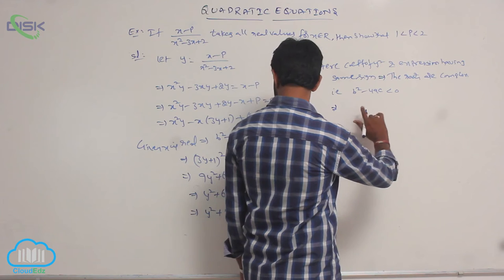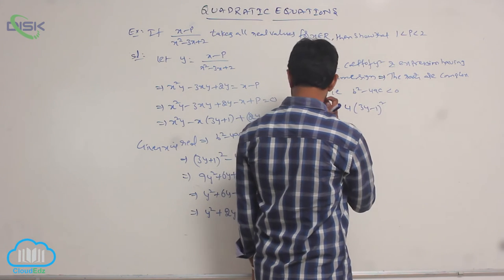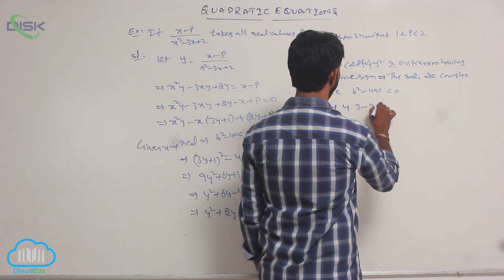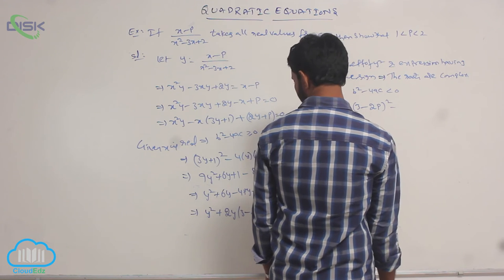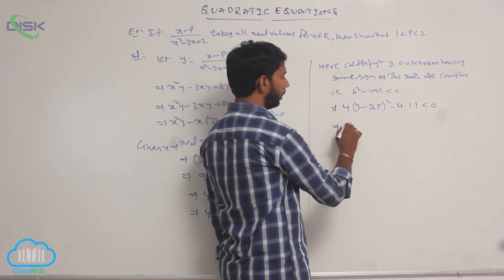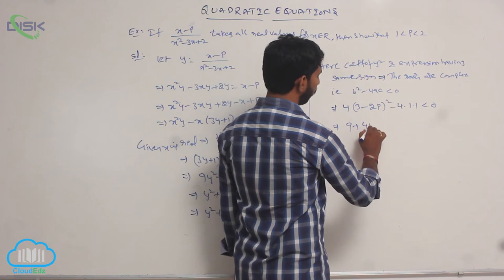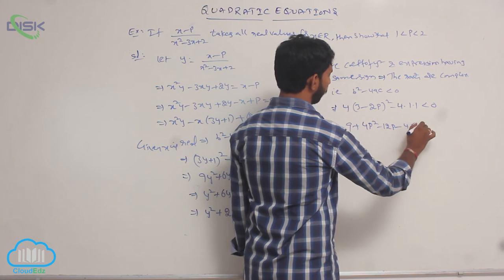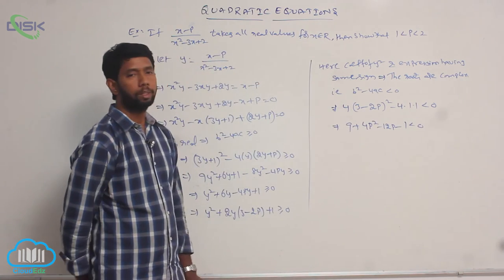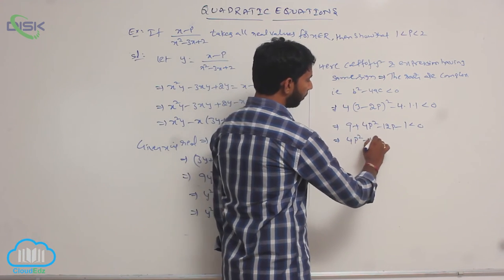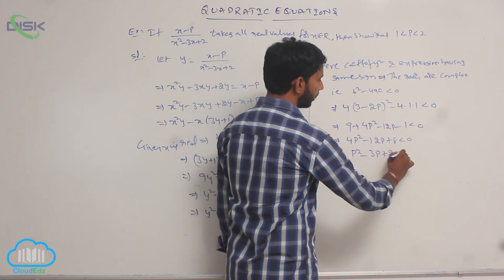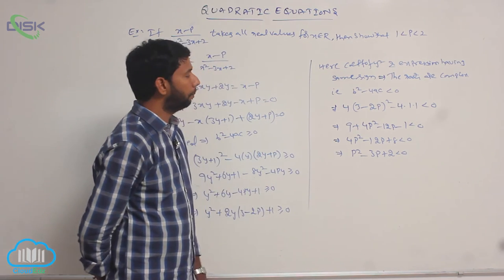That implies: b is 2(3 minus 2p), so b squared minus 4ac equals 4(3 minus 2p) squared minus 4 times 1 times 1 less than 0. Here 4 is common: (9 plus 4p squared minus 12p) minus 1 less than 0, giving 4p squared minus 12p plus 8 less than 0. Dividing by 4: p squared minus 3p plus 2 less than 0.